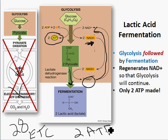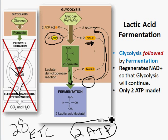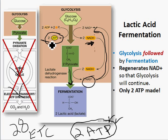Fermentation is not as efficient in energy production as aerobic respiration, but it allows cells to continue making at least some ATP when oxygen becomes limited. Lactic acid fermentation is what happens in your muscles when you're working out and not getting enough oxygen. Your cells do lactic acid fermentation to make a little ATP for energy. That lactic acid accumulates, causing your muscles to burn and cramp up, so you have to slow down and get more oxygen. And that's fermentation.